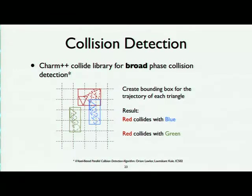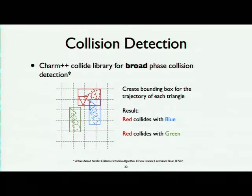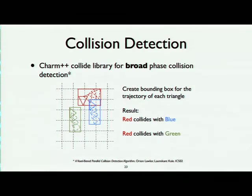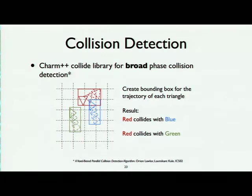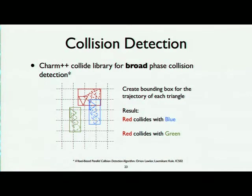When we roll back, we add a penalty force to prevent cloth pieces from penetrating. Collision detection has two phases. The first is broad-phase collision detection, which uses a faster but coarser method to detect potential collisions. We use the existing Collide library in Charm++, which creates a bounding box for the trajectory of each triangle. If two bounding boxes fall into the same grid cell, the Collide library marks them as potentially colliding. This can produce false positives — for example, the red and green triangles may be flagged even though their trajectories have no actual overlap.